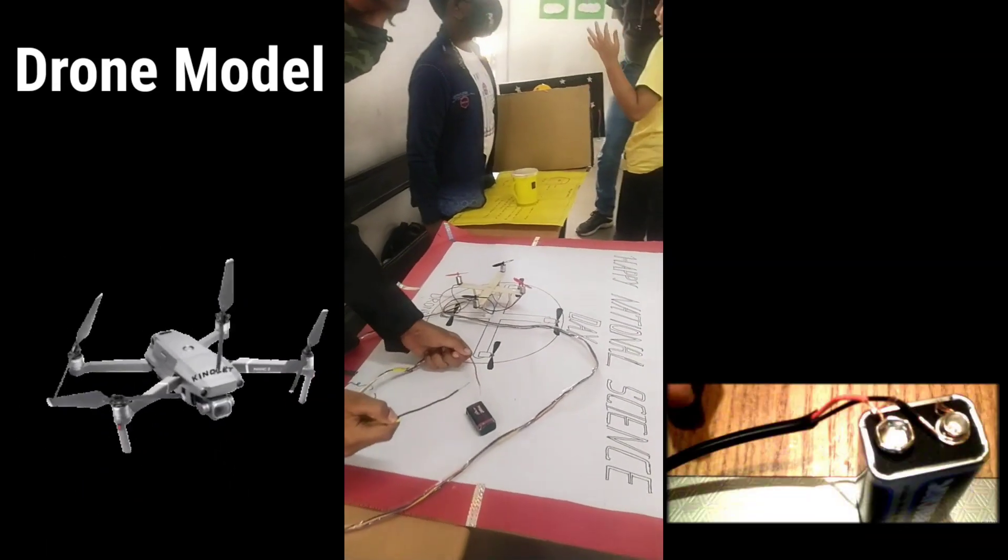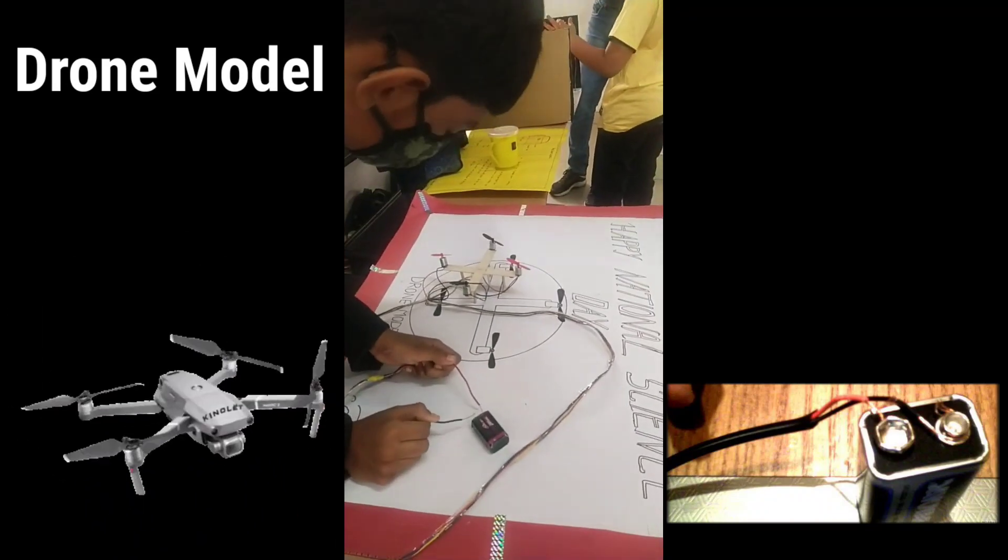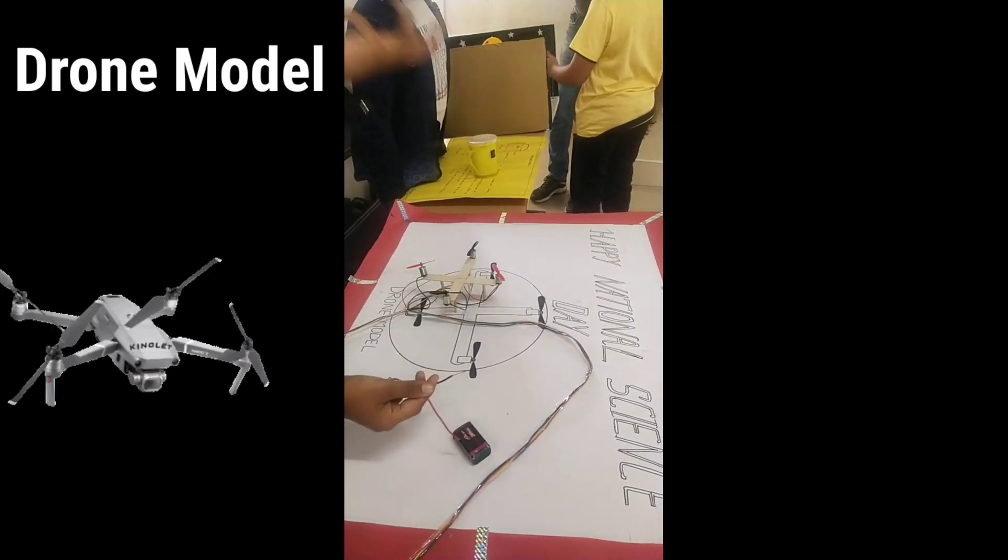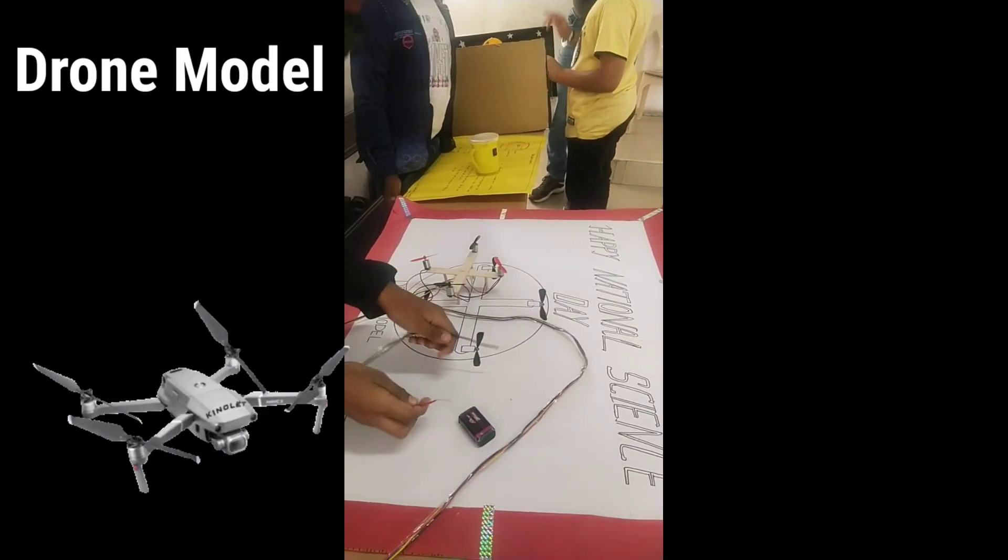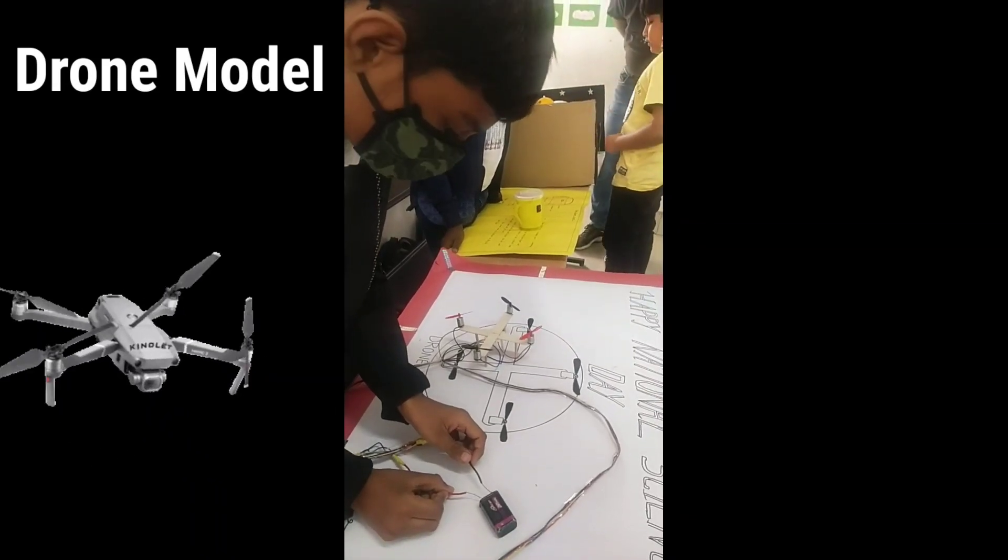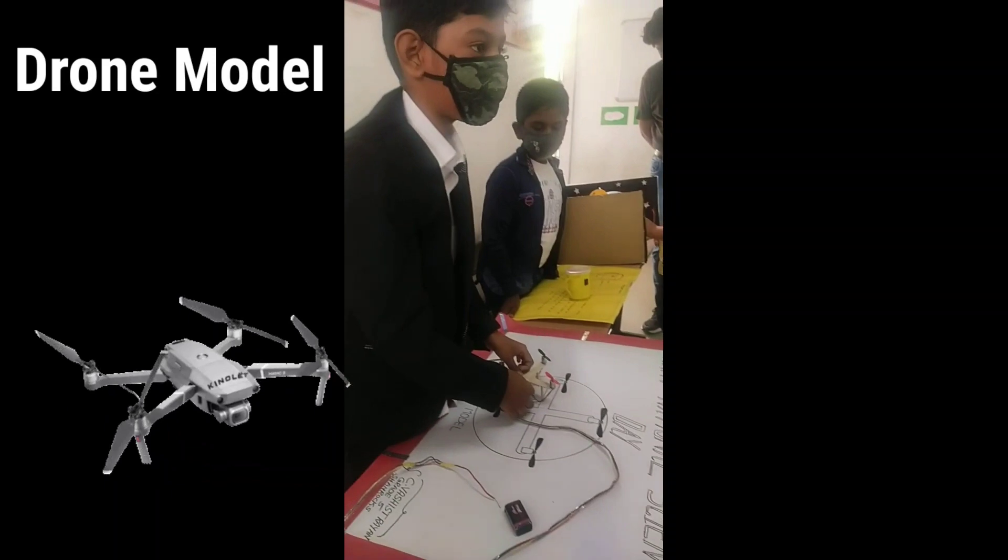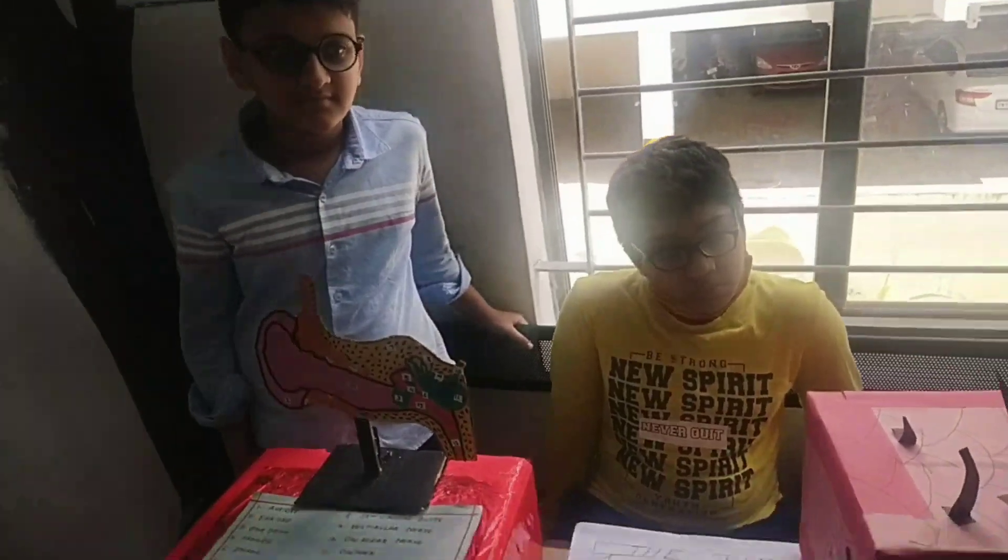The drone will not be able to fly because the air is coming upwards. Now I am keeping the negative wire to negative point and positive wire to positive point. The drone will try to fly now. See how it works. It's only for experimental purpose.